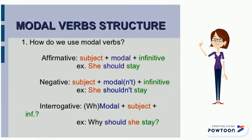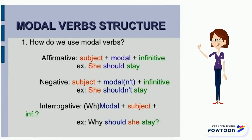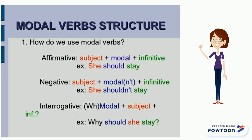As we did with modal verb can, here we follow the same structure. In affirmative, we have subject, modal, and infinitive. For example: she should stay. In negative, we also have subject, modal, and infinitive. In interrogative, we have modal, subject, and infinitive. For example: why should she stay?